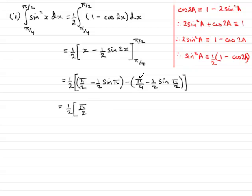We've now got minus pi upon 4, and inside the bracket here the sin of pi upon 2, or the sin of 90 degrees is 1, so we have minus half times 1, so that's minus a half, but then you got minus minus a half so that's going to be plus a half.